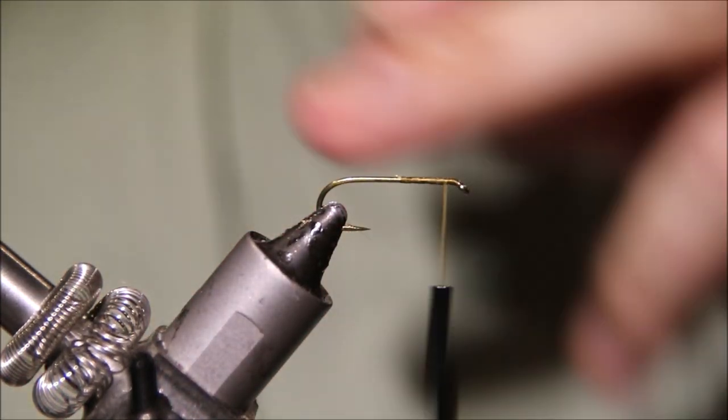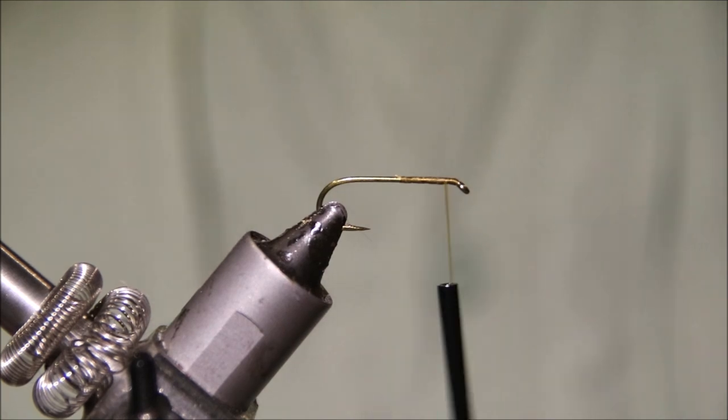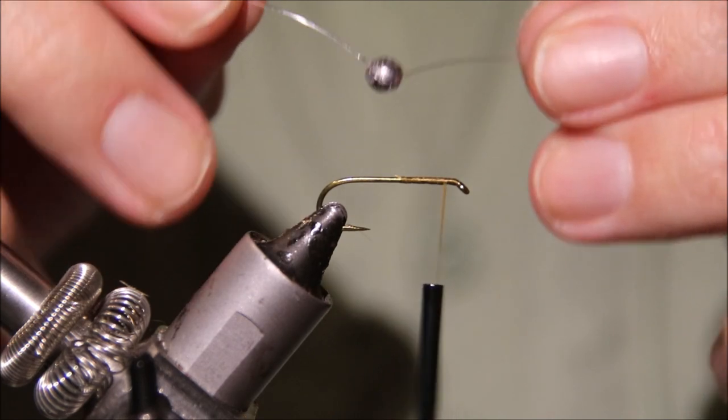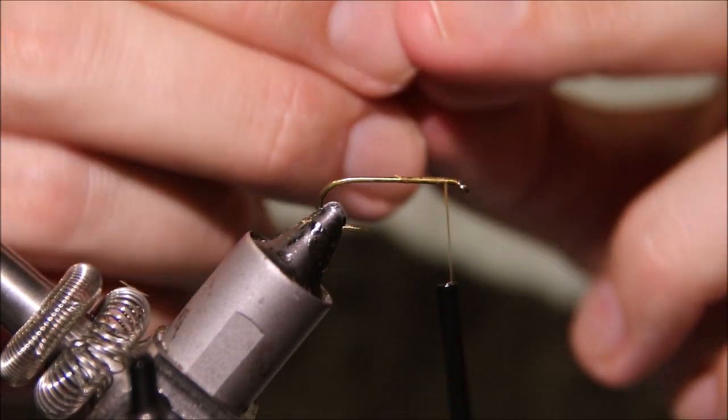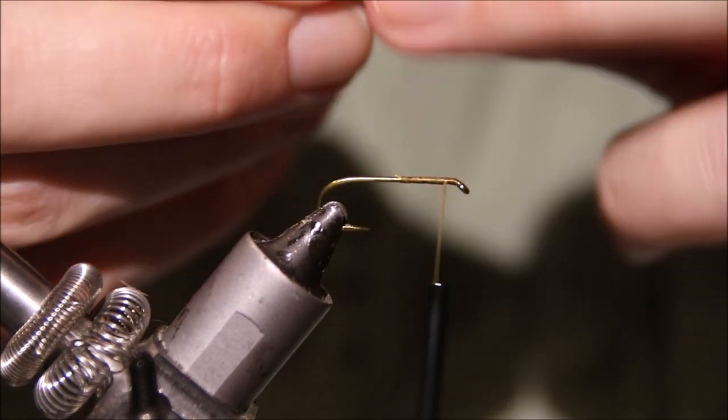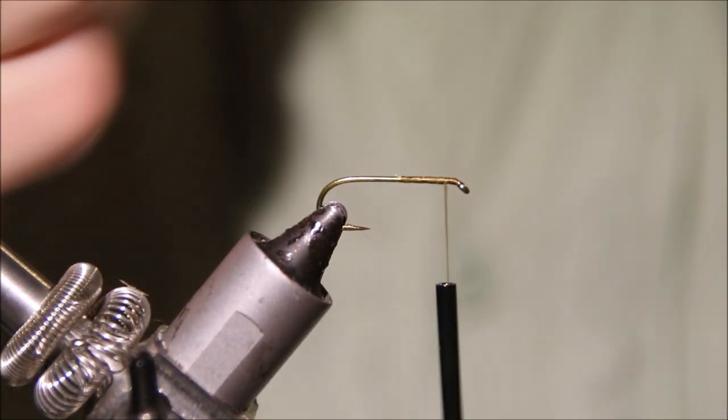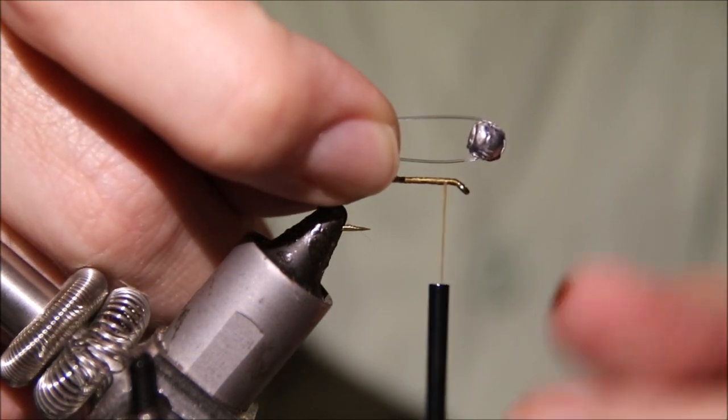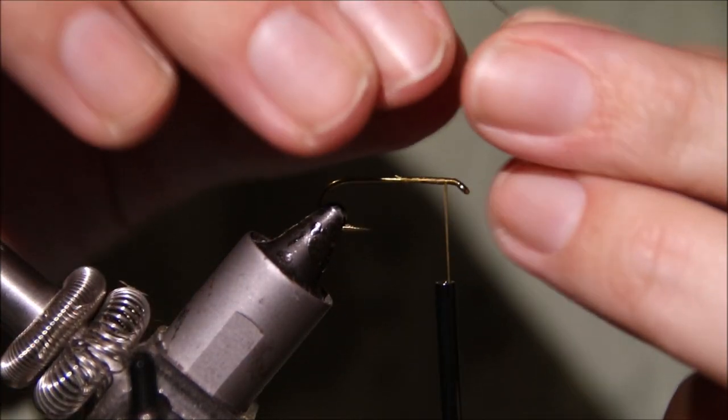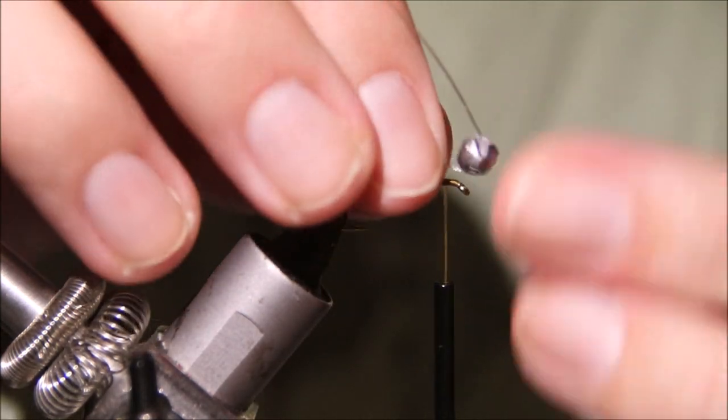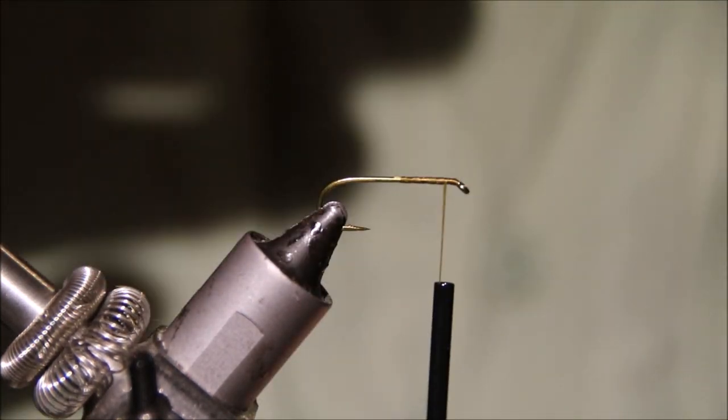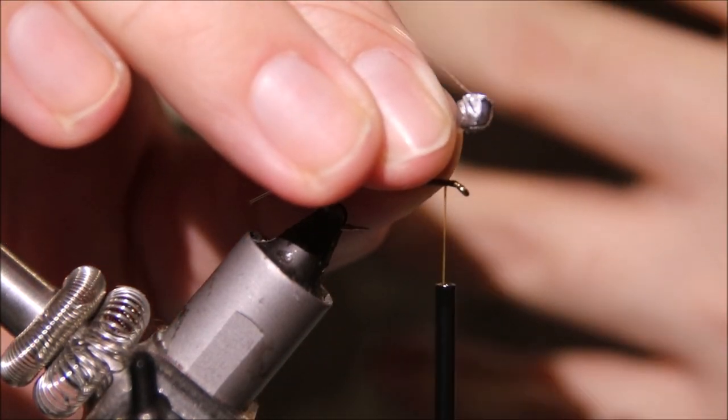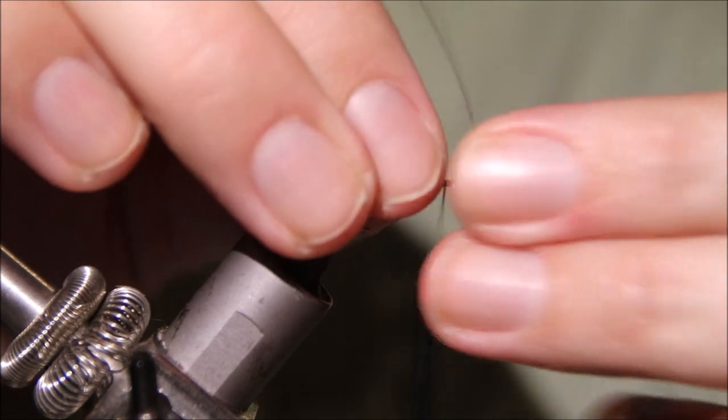I've run on a base there about half the shank length. Then I've got a non-toxic split shot—the original was tied with lead but we don't use lead anymore—on a piece of 12 pound nylon fluorocarbon. I'm going to tie it in with the split facing forward so it's trapped on and can't fall off.